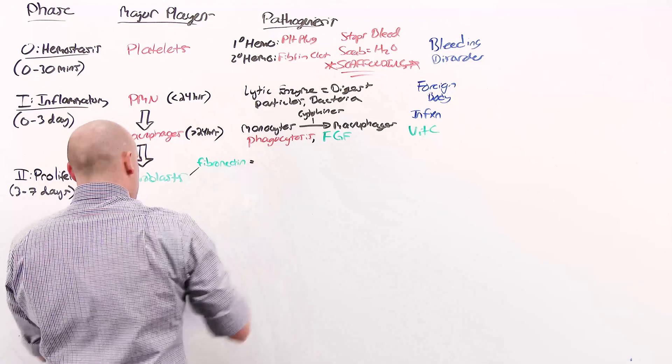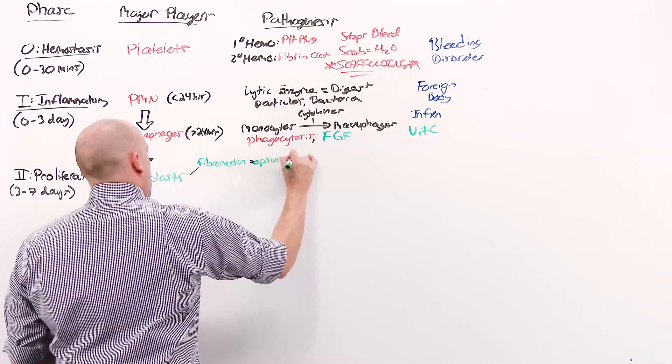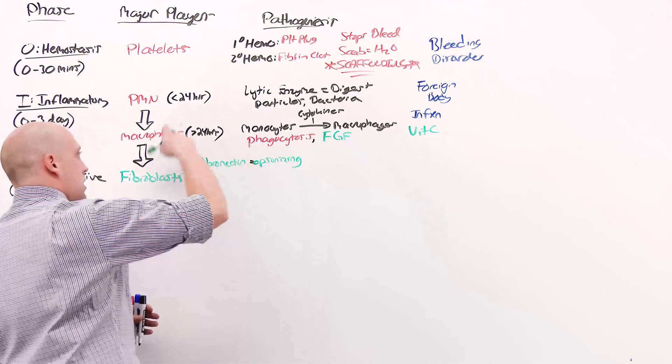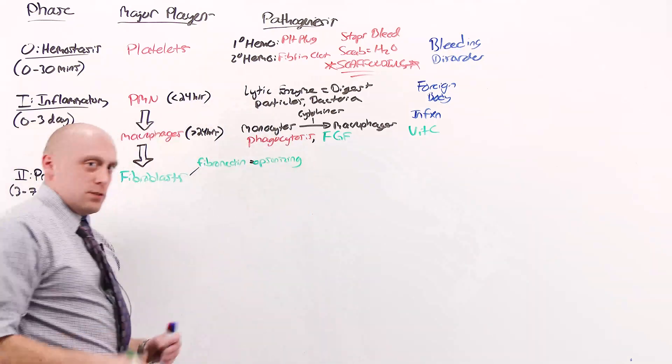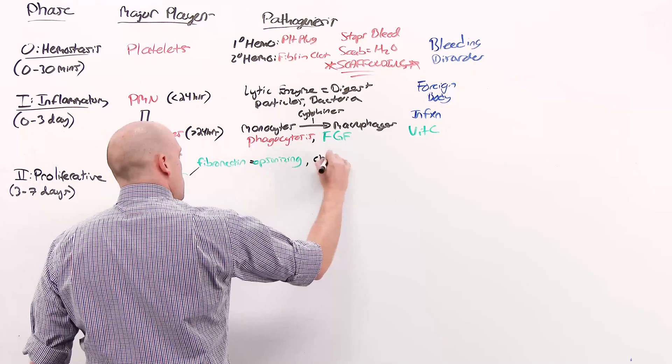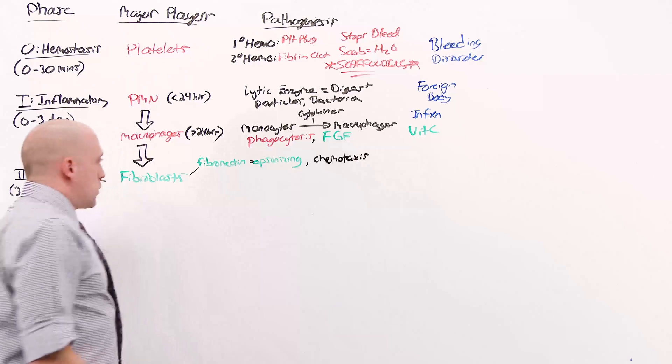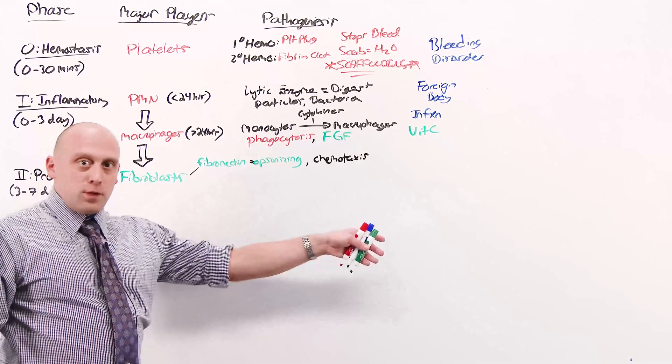The fibroblasts secrete fibronectin. Fibronectin acts as an opsonizing agent, which facilitates macrophages phagocytosing foreign elements, and acts as chemotaxis for more fibroblasts. So fibroblasts feed forward more fibroblasts coming in.